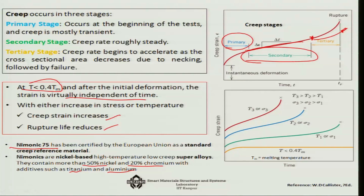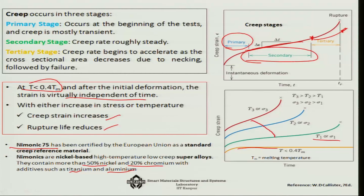When the temperature is less than 0.4 Tm, creep is not very predominant — the creep strain is almost constant. But if temperature or stress increases, you can see how the nature changes: there is a steady increase of the creep strain, which must always be studied with respect to a material.